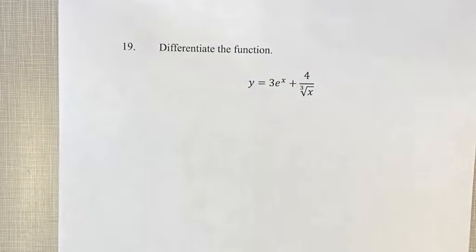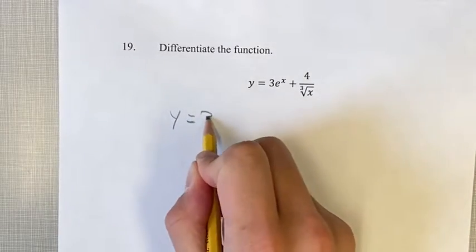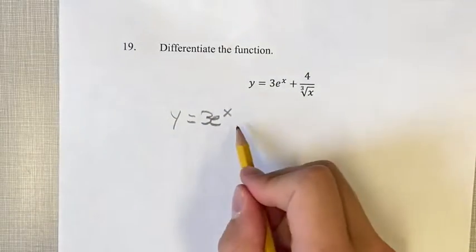Now this e^x is going to be really simple since the derivative of e^x is just e^x, but this isn't in a form that we know how to derive yet. So we just leave this the same, 3e^x plus.